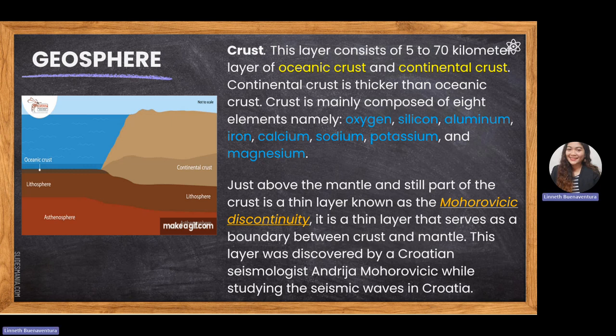The crust is commonly composed of oxygen, silicon, aluminum, iron, calcium, sodium, potassium, and magnesium, but its major composition is silicate materials. Just above the mantle is a thin layer known as the Mohorovicic discontinuity, which serves as the boundary between the crust and the mantle. This discontinuity line was discovered by Croatian seismologist Andrija Mohorovicic while studying seismic waves in Croatia.